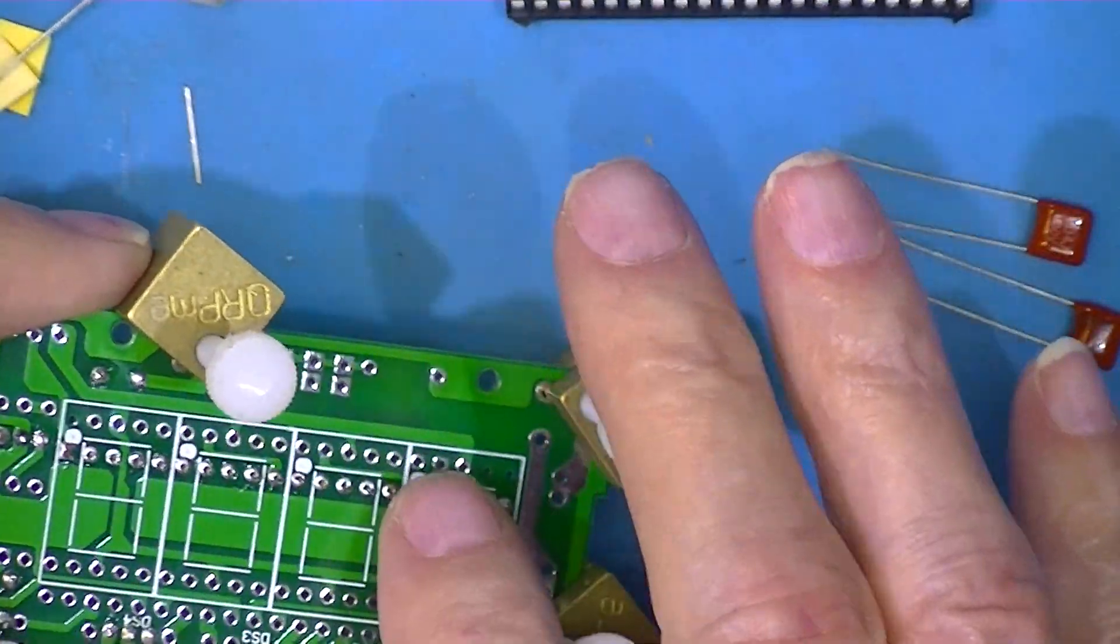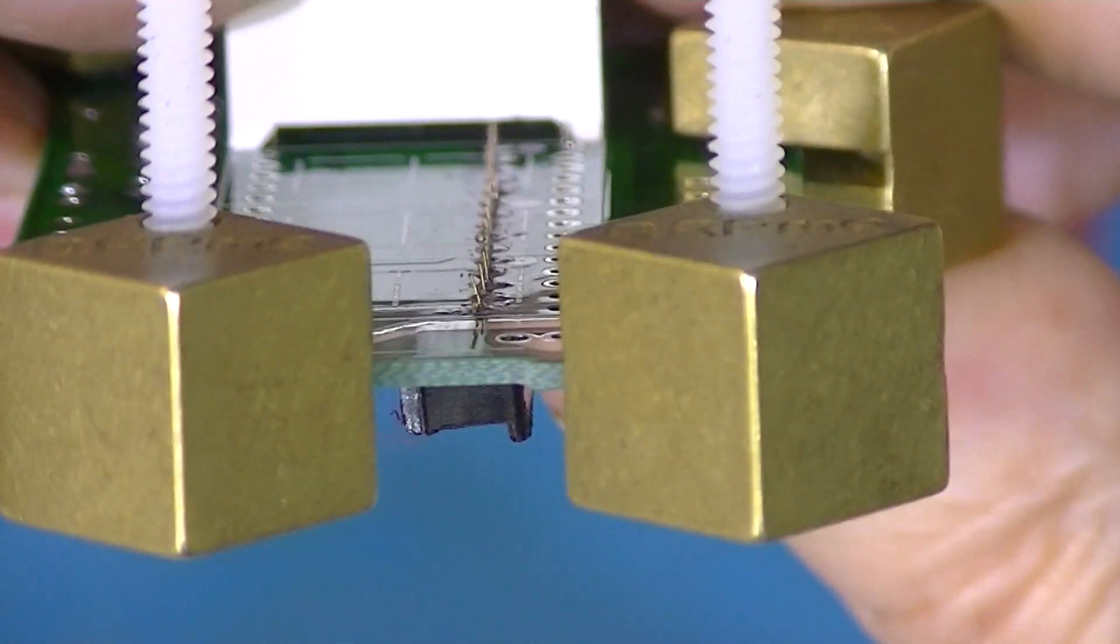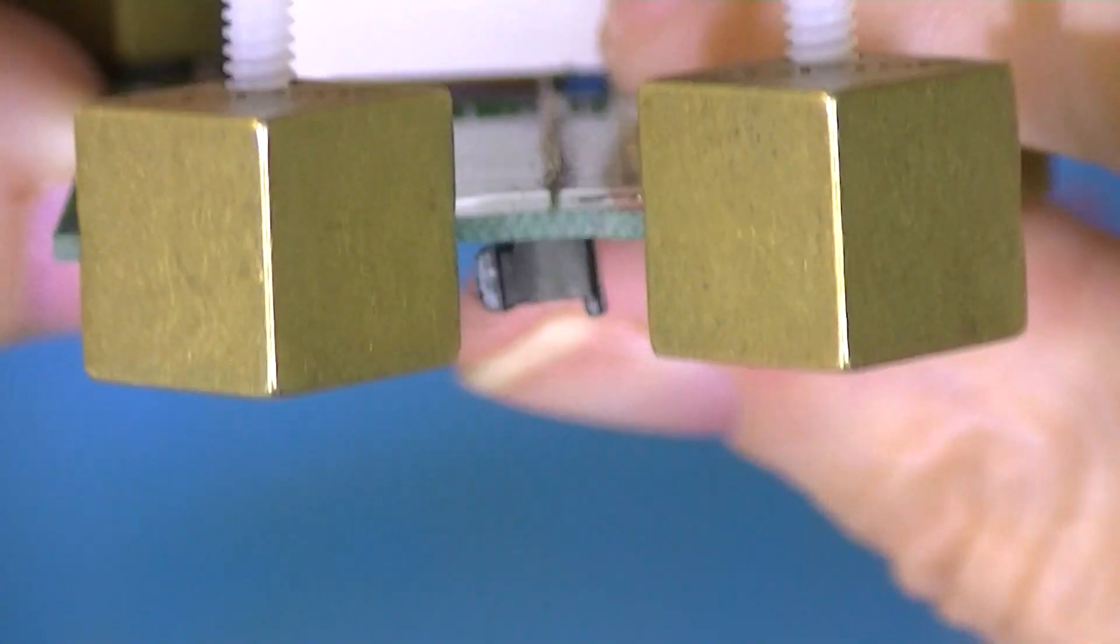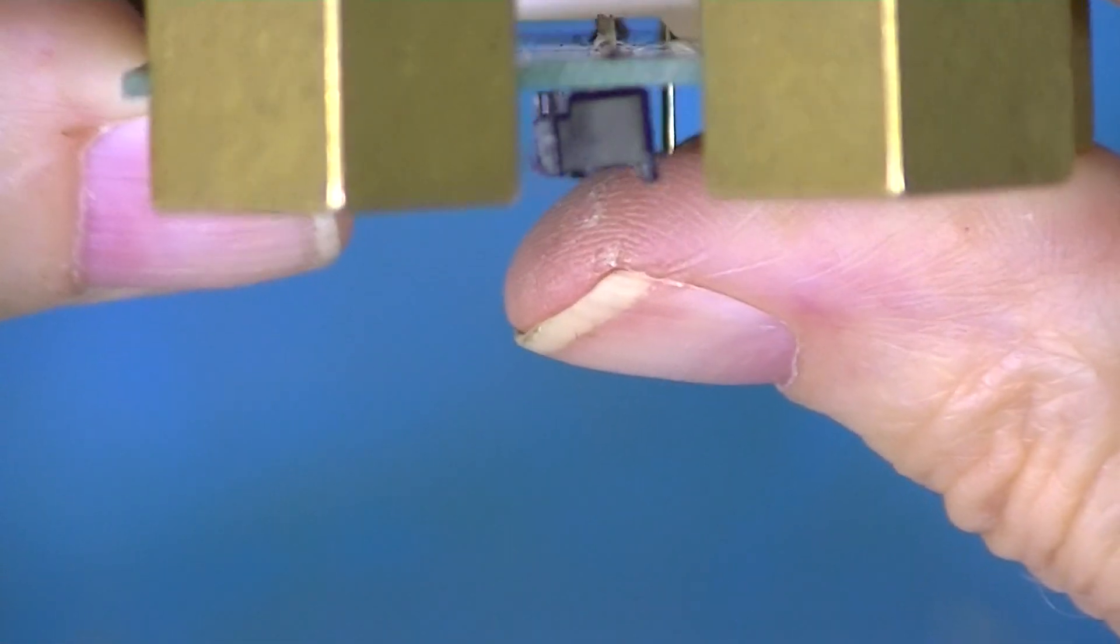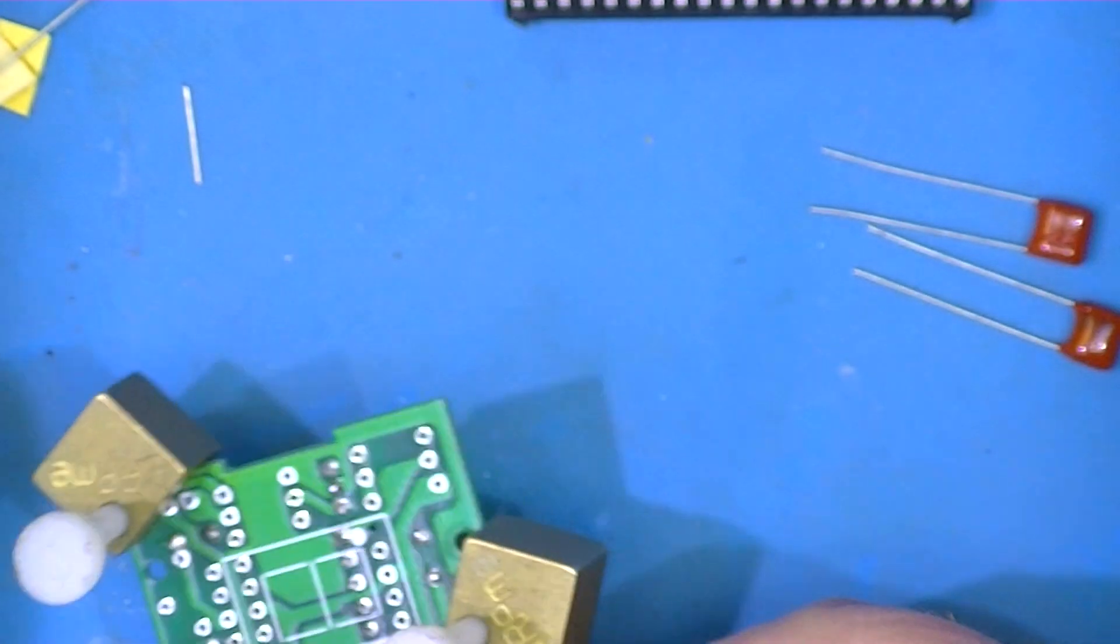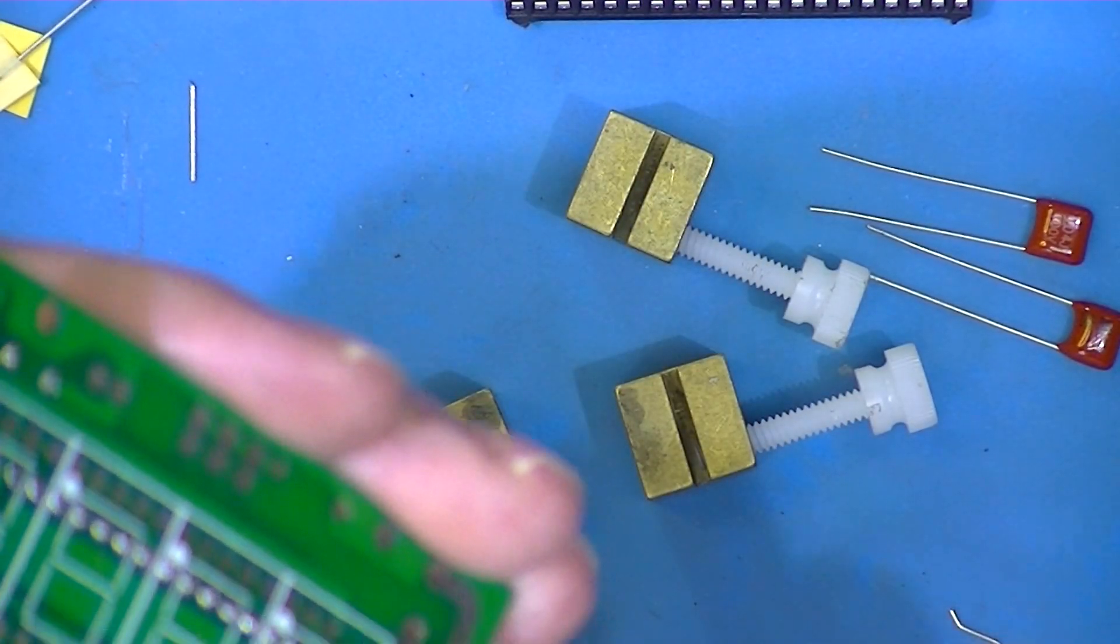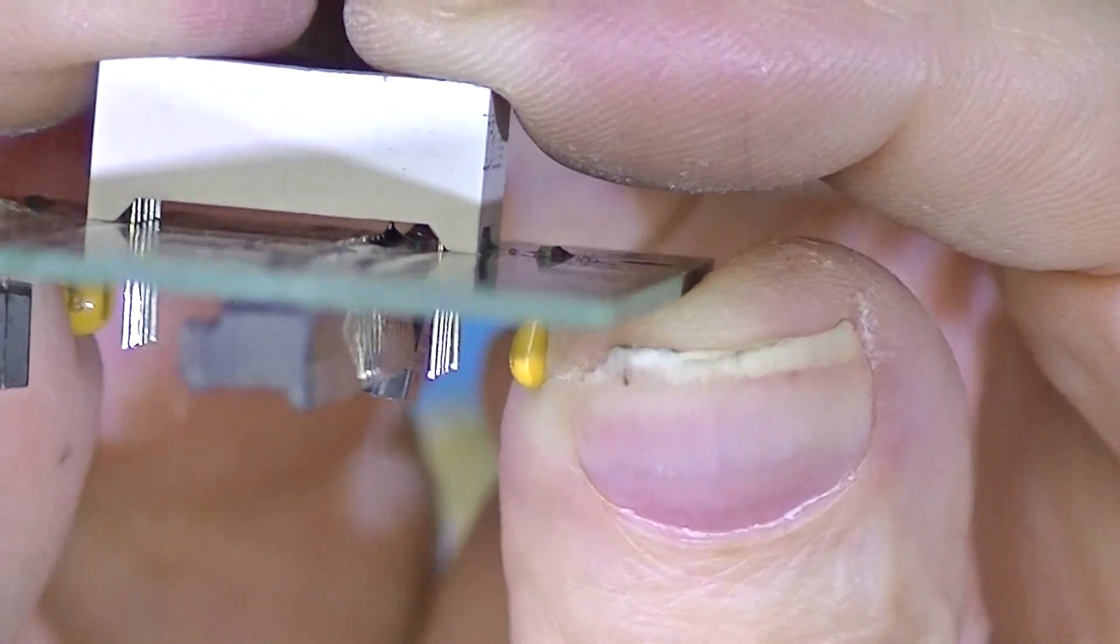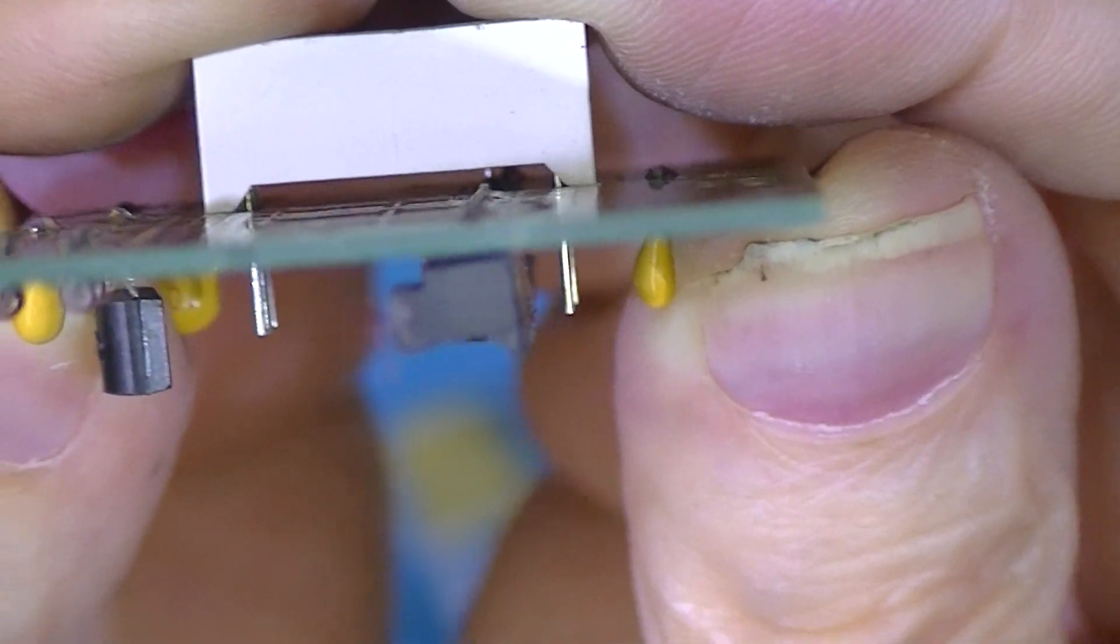But now with this row soldered I can install the segments. You see how these tabs, these legs from the socket stick up underneath the LED. There's not much clearance there. So what I'm going to do is just cut these off a little tiny bit. Protect your eyes when you do this.